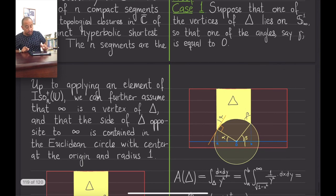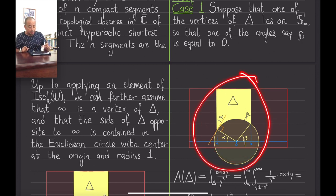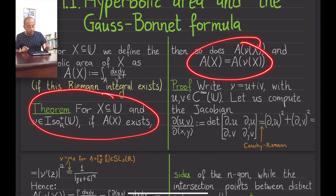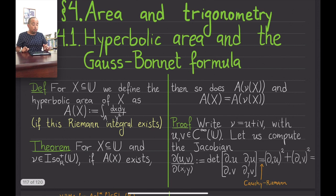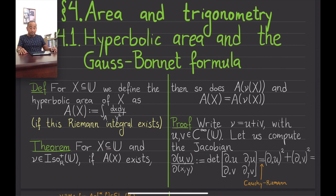Notice that to arrive at this particular configuration we used the invariance of hyperbolic area under orientation-preserving isometries. As an exercise, knowing that hyperbolic area is invariant under all orientation-preserving isometries, prove that it is also invariant under arbitrary isometries of the upper half plane — it is easier than it sounds.